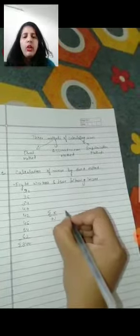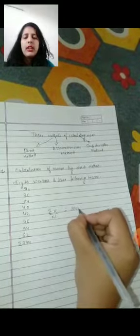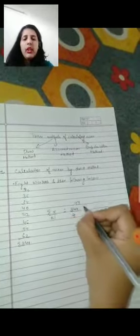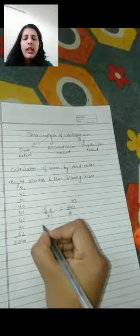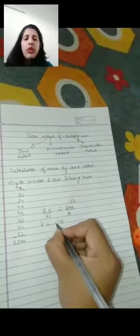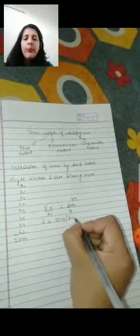So the formula of direct method is summation of x by n. Summation of x is the income of workers. So 344 by n is number of workers. There are eight workers, that is 344 by 8 equals 43. This is our answer. This is direct method.